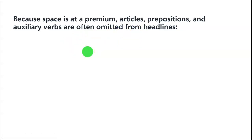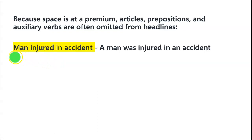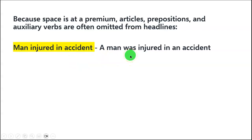When you are learning English at the beginner's level, you are told that a correct English sentence will always have articles like 'a' and 'an', prepositions like 'in', 'on', 'at', and auxiliary verbs. But in newspaper headlines these are missing. For example: 'Man injured in accident' — the article 'a' and the verb 'was' are missing. It's a grammatically incorrect statement, but you understand what they are trying to convey.